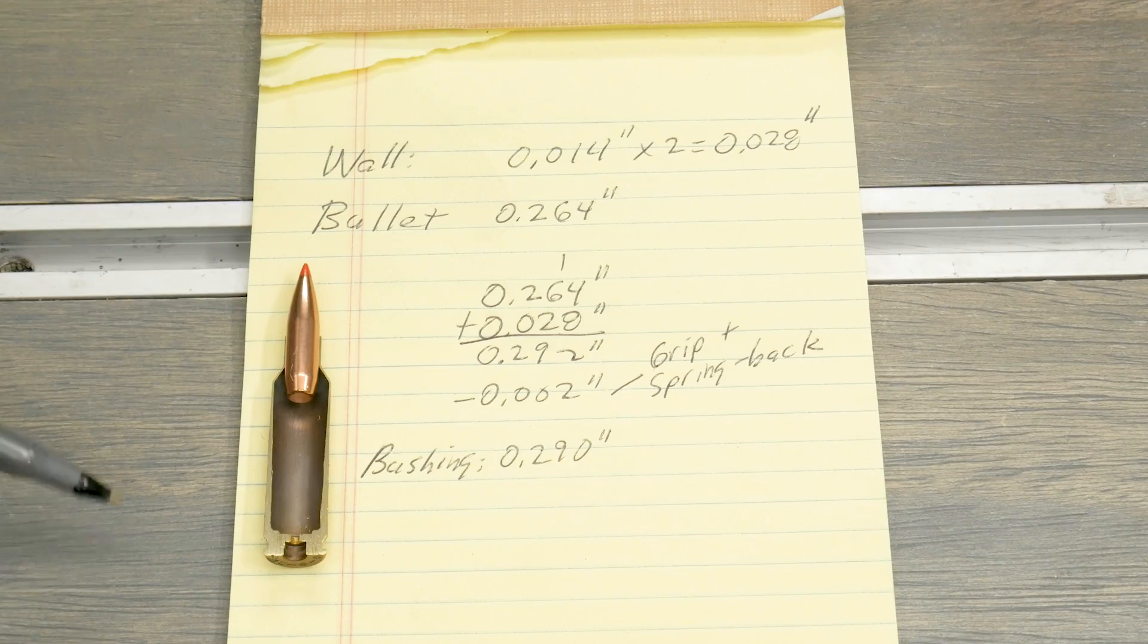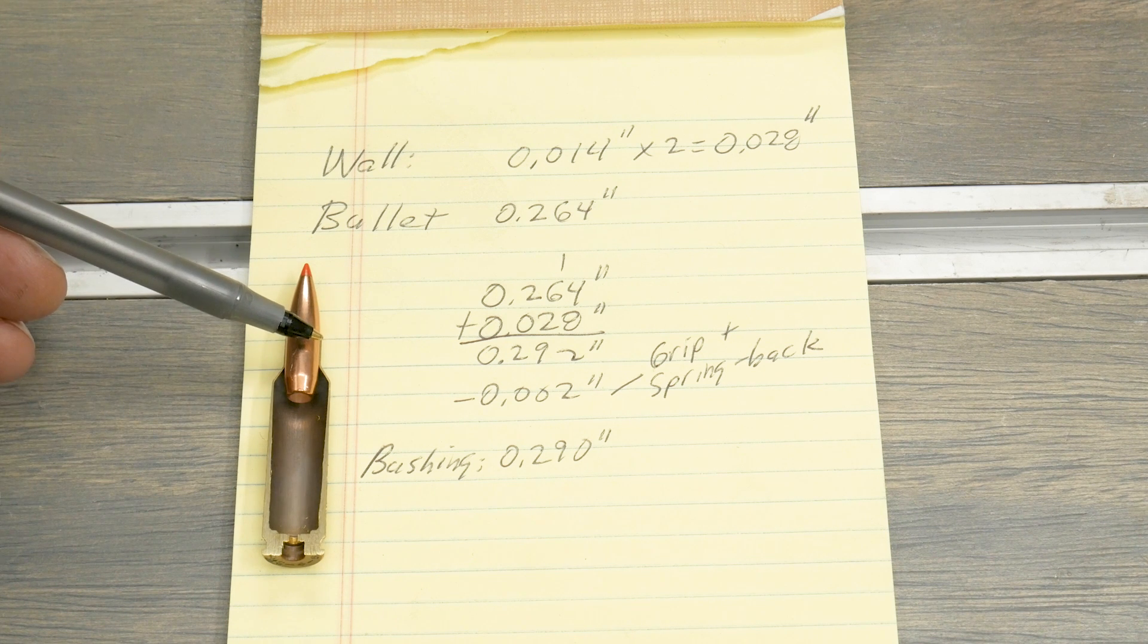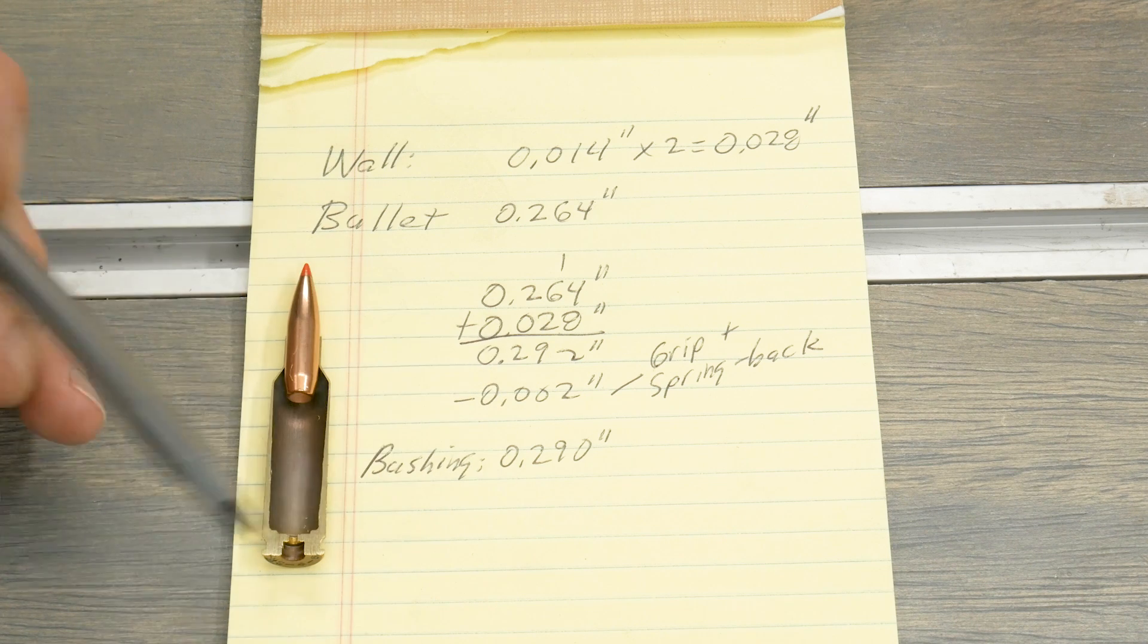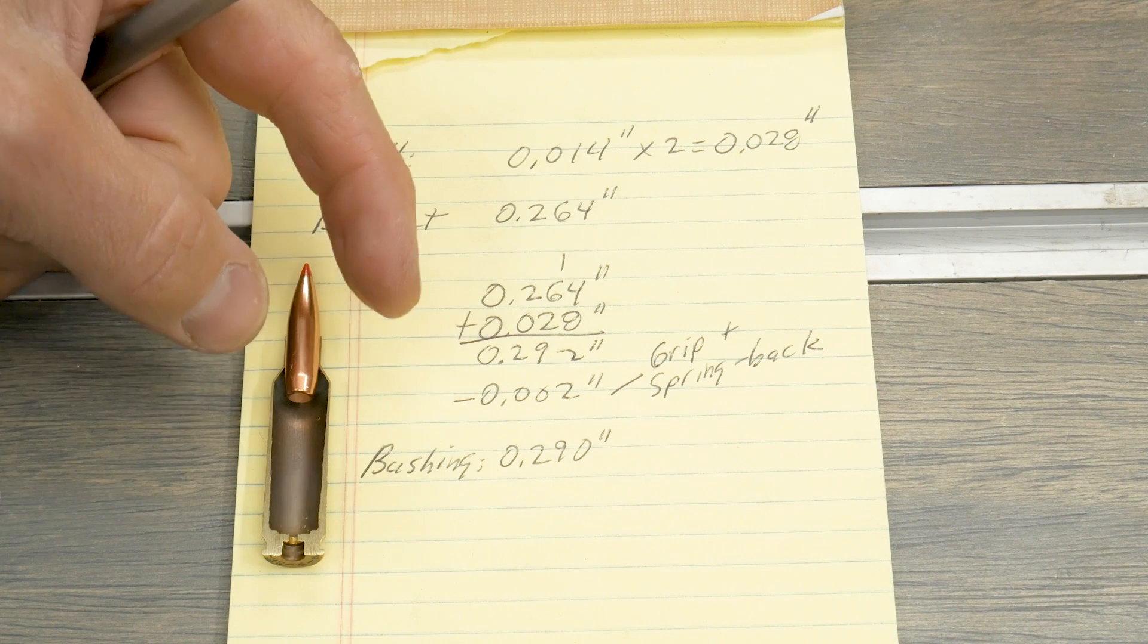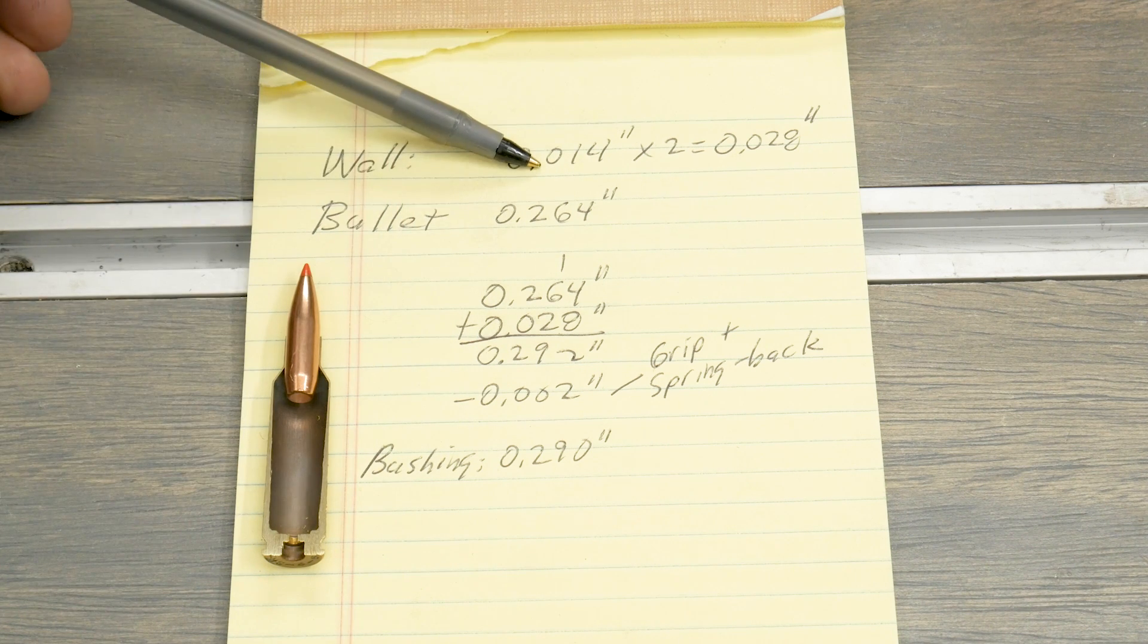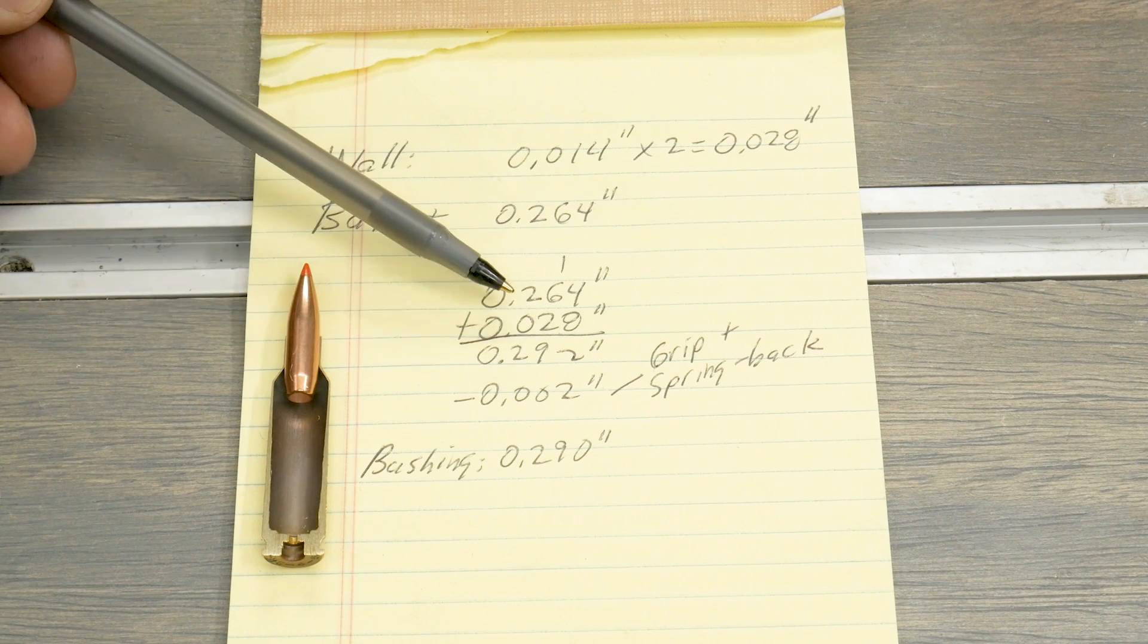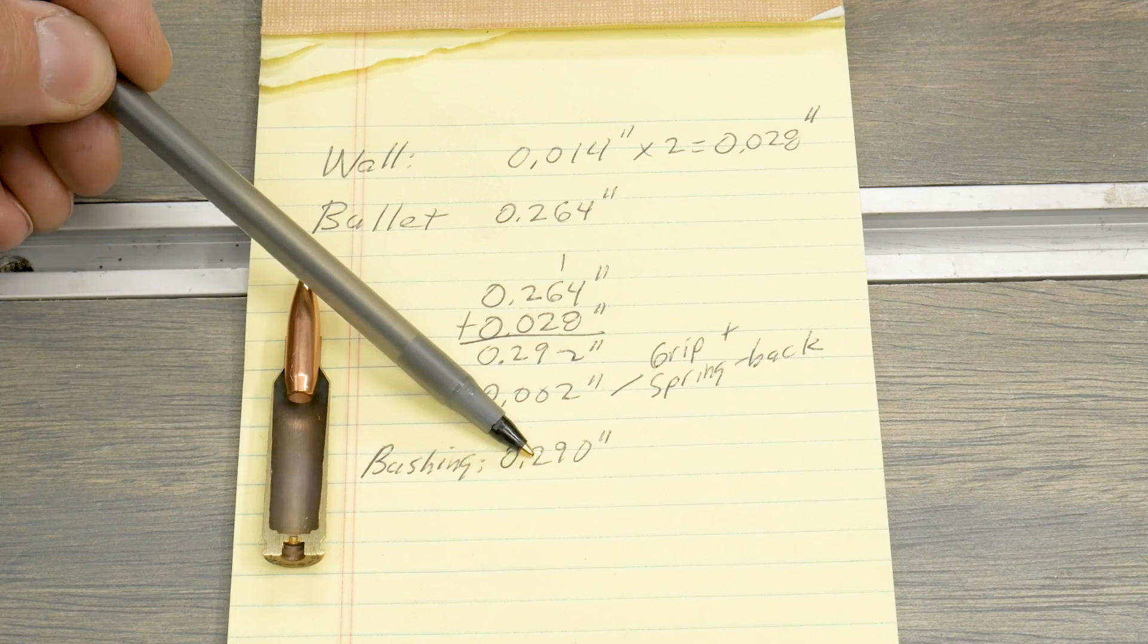So let me walk through the math here. What we're really calculating is the bullet diameter plus two times the neck thickness and then we're subtracting two thousandths of an inch. That's going to give us about a thousandth of spring back, which means we're going to size a thousandth under for that much press fit. So our wall is 14. Two times that is 28. The bullet is 264. So we add 264 plus 28 minus 2 gives us 290.